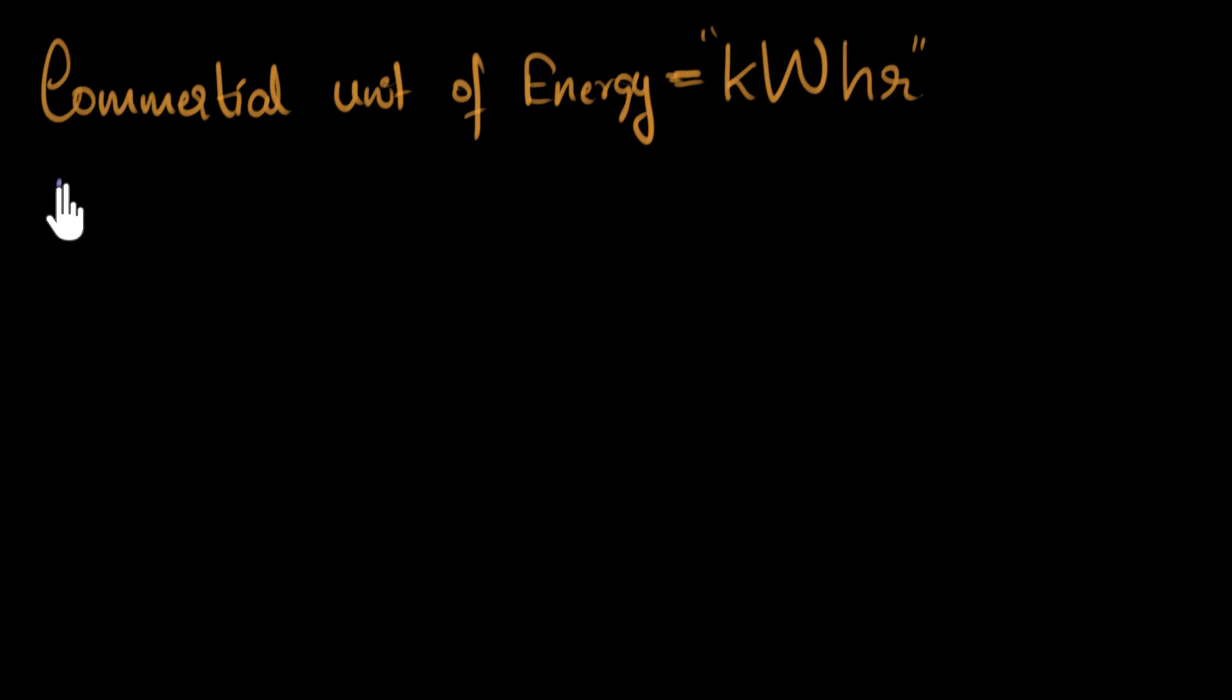We have seen in previous videos that power consumed by any device, electric power consumed by any device, is usually written as the amount of energy that it consumes per time. And so from this, since we want to know what energy is, we can now write energy is power multiplied by time: E = P × t.